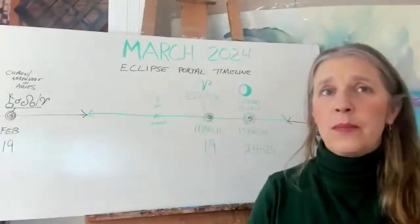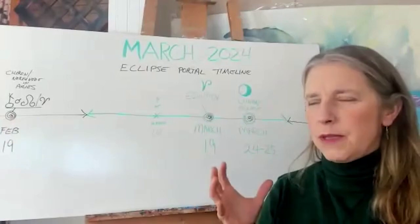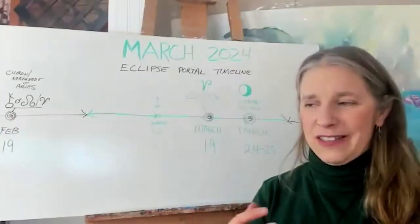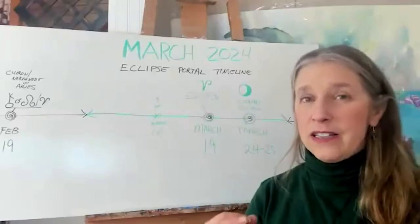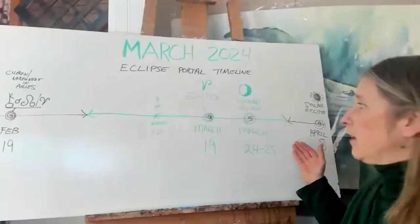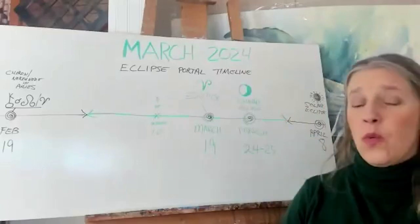I'm calling it the eclipse portal timeline because the biggest energy event that is coming up here for us is going to be this April 8th eclipse. It's a total solar eclipse and it's going to be a big one.